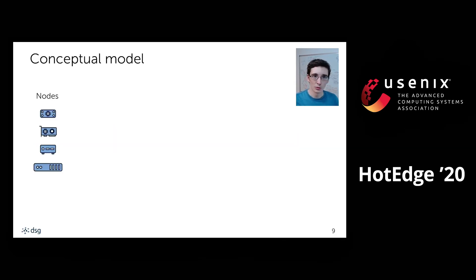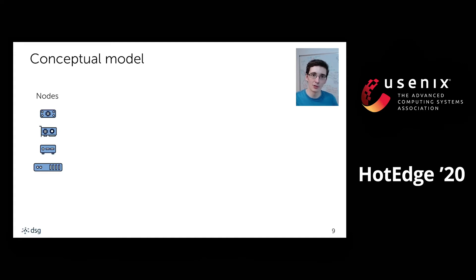The conceptual model of the tool is very simple but provides a flexible way of creating edge network topologies. The first concept is a node — any type of compute device. We provide a bunch of different node types out of the box, like a single board computer or a server computer, pre-parameterized with default values that you can override. So you could instantiate, for example, a Raspberry Pi 3 or an Intel NUC.